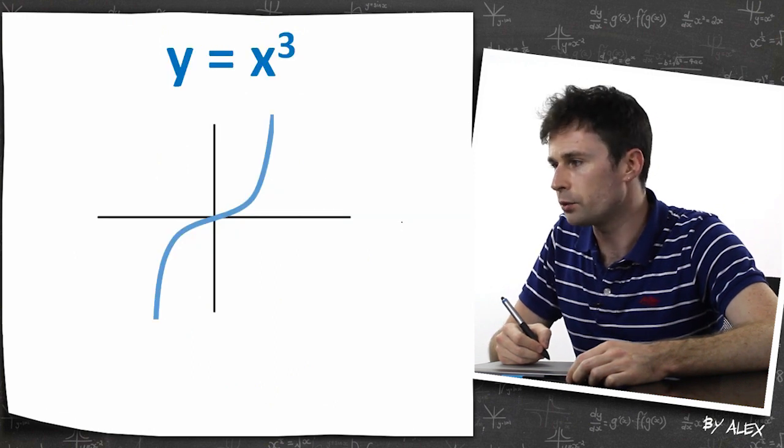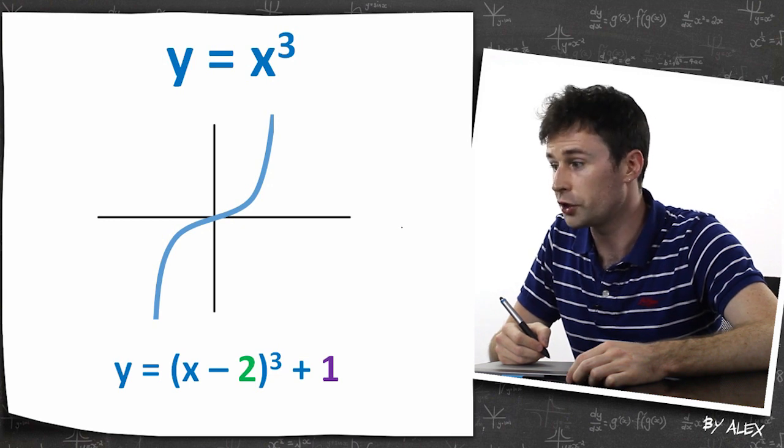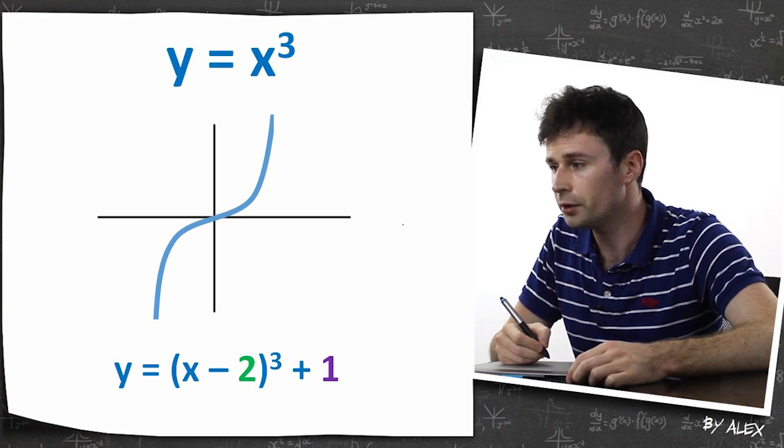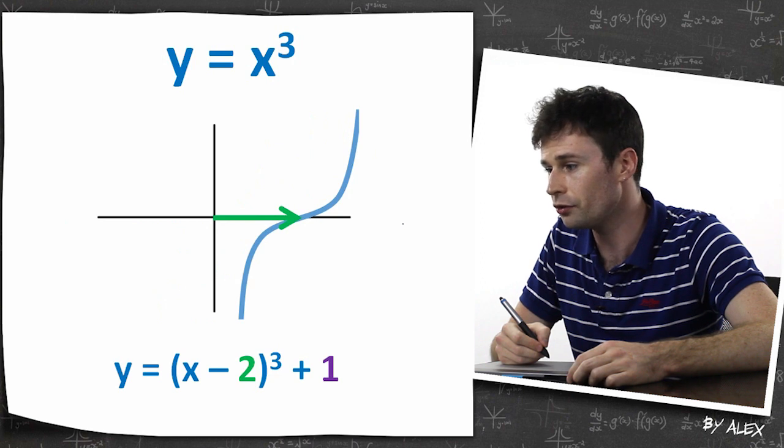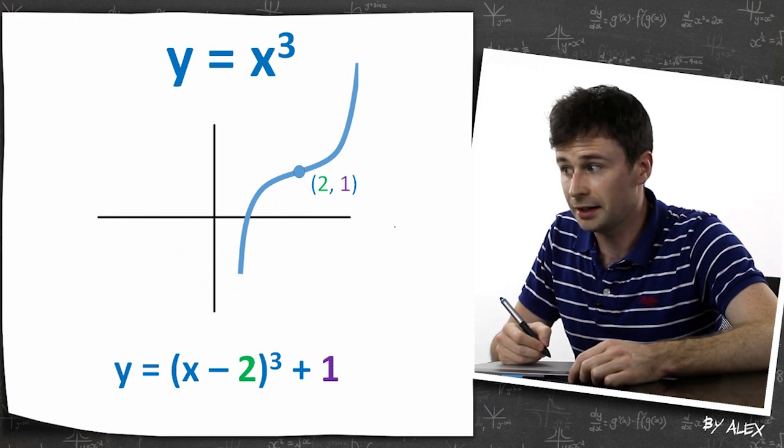So if you've got y equals x cubed, like this one, and you want to change it into y equals x minus two cubed plus one, well all you have to do is plus two on the x axis and plus one on the y axis. Put in the turning point, and then there you go.